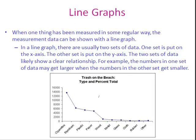When one thing has been measured in some regular way, the measurement data can be shown with a line graph. In a line graph, there are usually two sets of data. One set is put on the x-axis and the other is put on the y-axis. The two sets of data likely show a clear relationship. For example, the numbers in one set of data may get larger when the numbers in the other set get smaller.